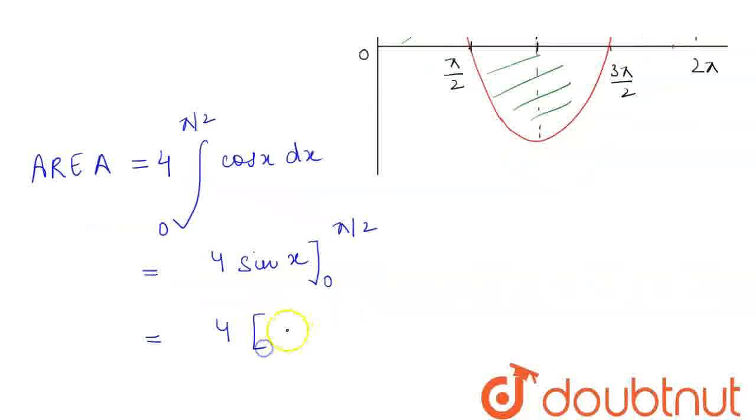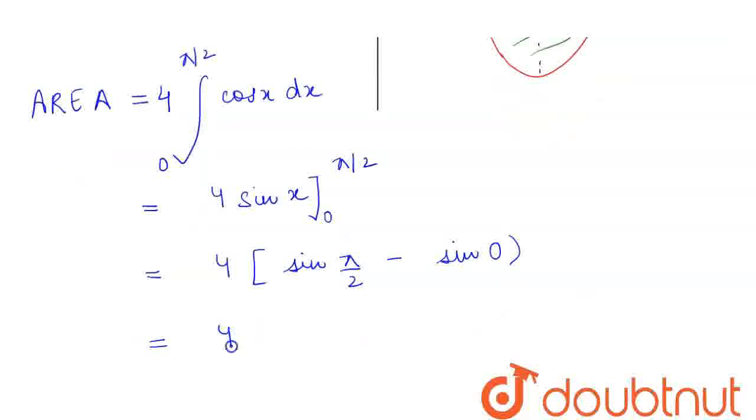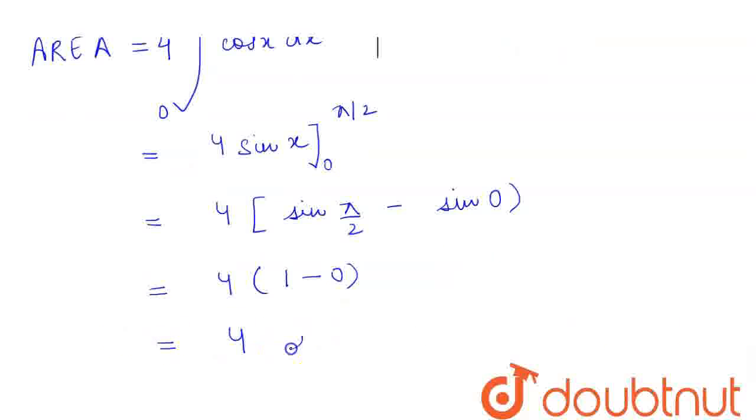Applying the limits from upper limit minus lower limit we will get sin π by 2 minus sin 0. This will be equal to 4 times, where the value of sin π by 2 is 1 and that of sin 0 is 0. So, this comes out to be equal to 4 square units and this is our required answer.